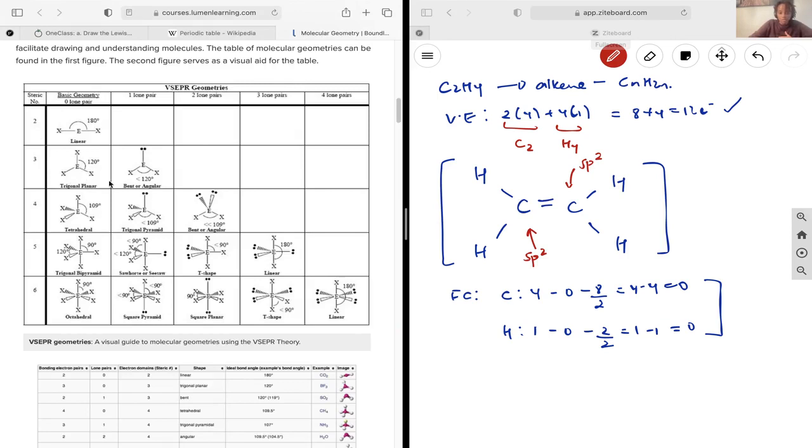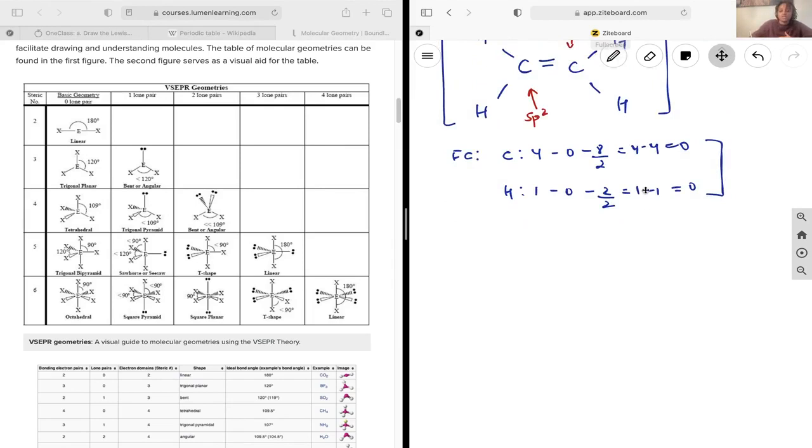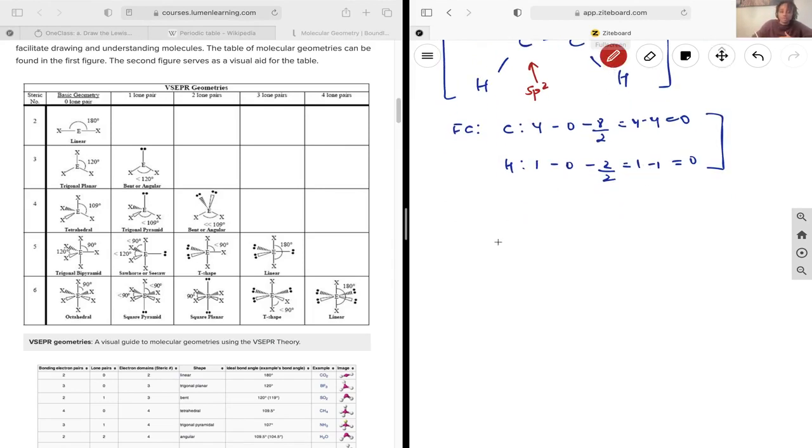We've already made this sketch look somewhat trigonal planar, but we can re-sketch it more clearly. We have H, H, H, H around the two carbons, so you can see the trigonal planar shape here.